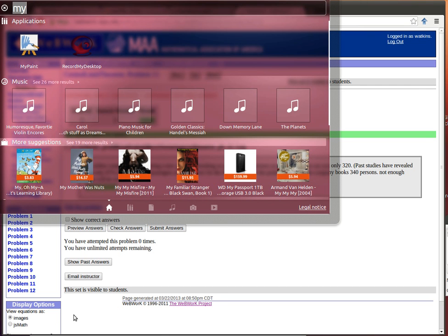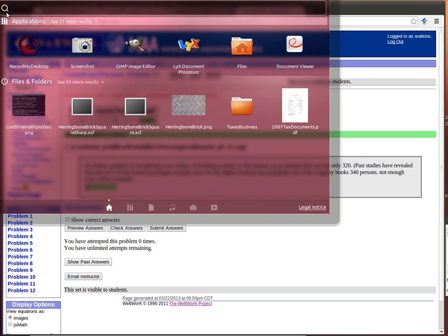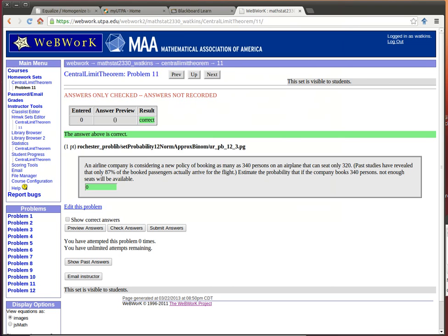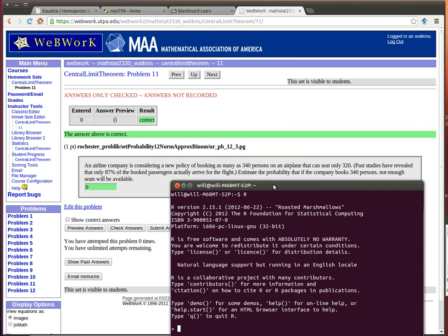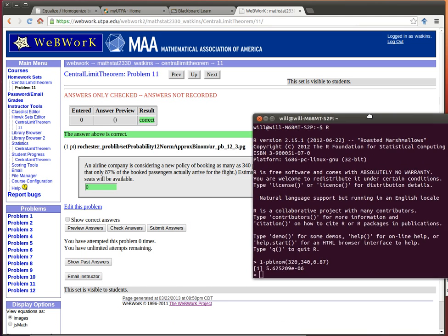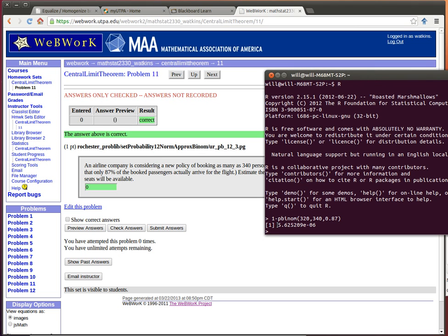When I did it in this other setting, when I did it in this version of R, then I had the one minus the pbinom of 320, 340, and the probability of success was 0.87. You'll notice that we're getting this particular amount, which I copied and pasted over to here.